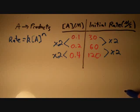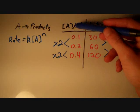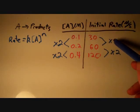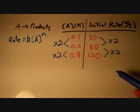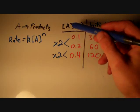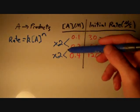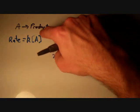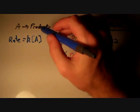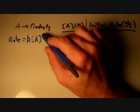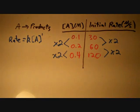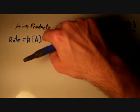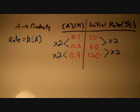What's going on is that the rate is directly proportional to the concentration. As the concentration doubles, the rate also doubles. Therefore, the rate is equal to k times the concentration of A to the first power, or simply k times the concentration of A. This is a first-order reaction.